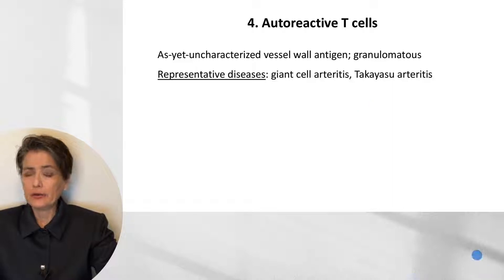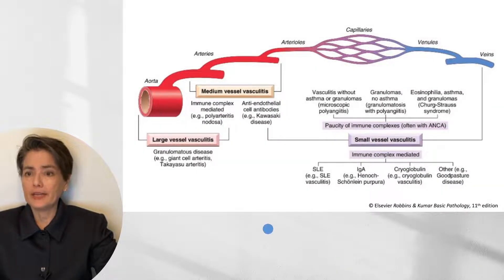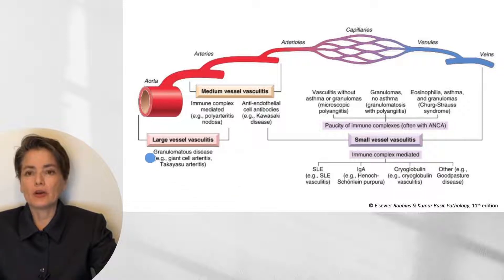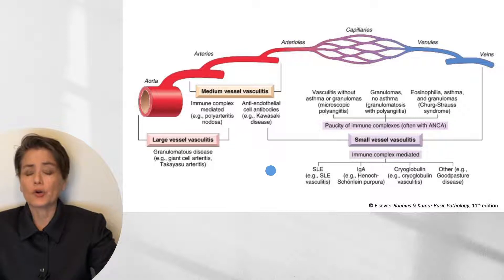You've probably noticed there is some overlap in the mechanisms seen in these various vasculitides, as well as overlap in their presentation. We can have large vessel vasculitis — typically granulomatous disease such as giant cell arteritis and Takayasu arteritis — through to medium vessel vasculitis and small vessel vasculitis. It's important to keep in mind that any of these diseases can occur in vessels of any caliber.